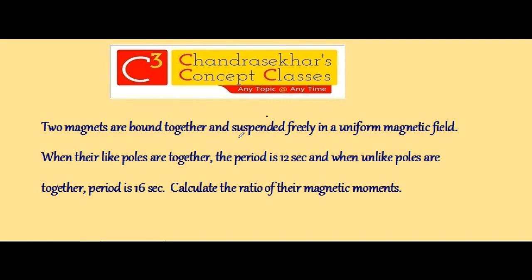Two magnets are bound together and suspended freely in a uniform magnetic field. When their like poles are together the period is 12 seconds and when unlike poles are together period is 16 seconds. Calculate the ratio of their magnetic moments.